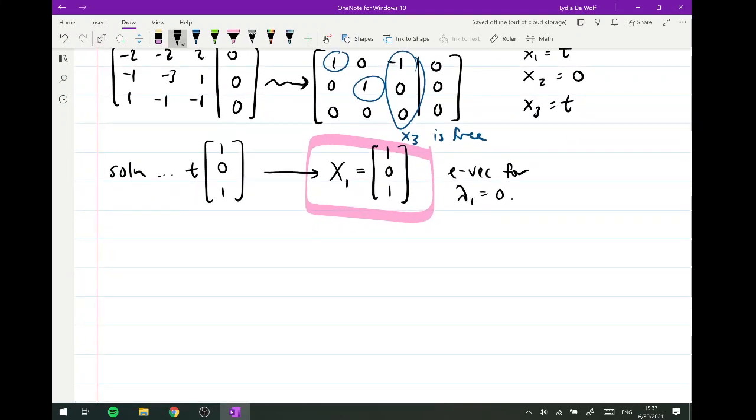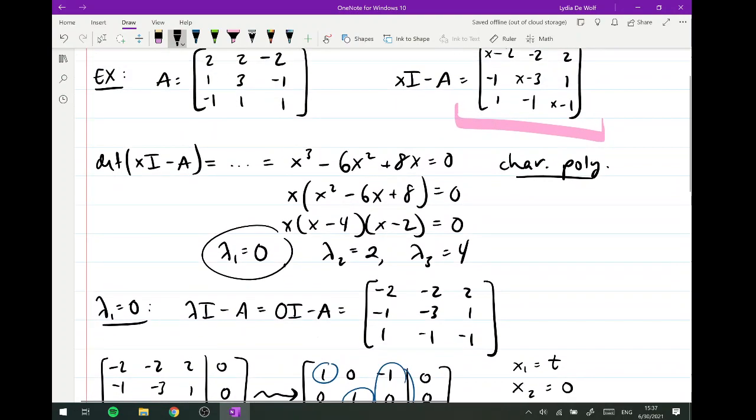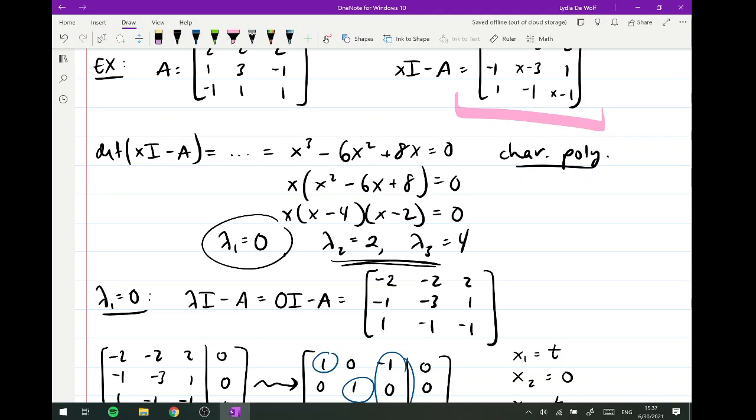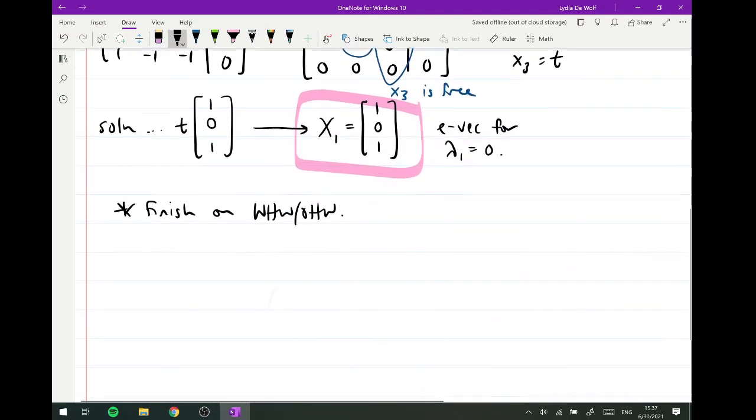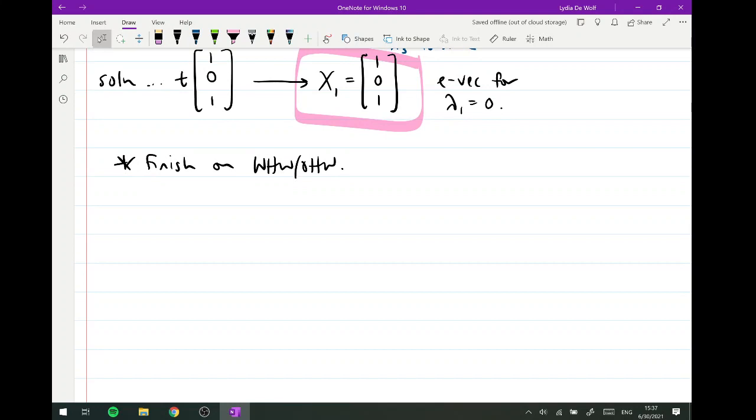I'm going to have you finish this on the written homework or the online homework. We'll see which one I make it. And by finish, I'm just going to mean these other two eigenvalues. I'll have you guys analyze the eigenvectors for it. And for us right now, we are going to move on into 7.1.3, which is got kind of a long title here. This is going to be about eigenvalues and eigenvectors for special matrix types.